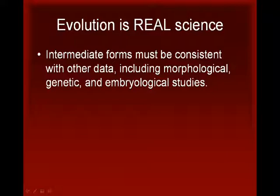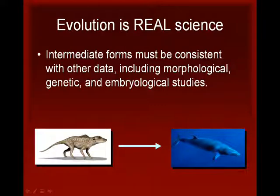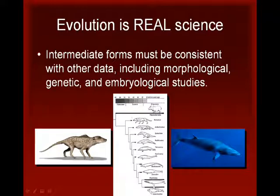Once again, evolution could be falsified by the discovery of a fossil that is inconsistent with these other lines of evidence. For example, evolution predicts intermediate forms between ancient land mammals and whales, because the morphological and genetic evidence indicates that whales are the descendants of land mammals. Intermediate forms should therefore exhibit traits that are transitional between these distinct groups. In addition, these intermediate forms should be found to have existed prior to the earliest recognizable modern whales, which show up in the fossil record about 30 million years ago. After decades of digging, such intermediate forms have indeed been discovered, in remarkable abundance and in precisely the order that makes evolutionary sense.